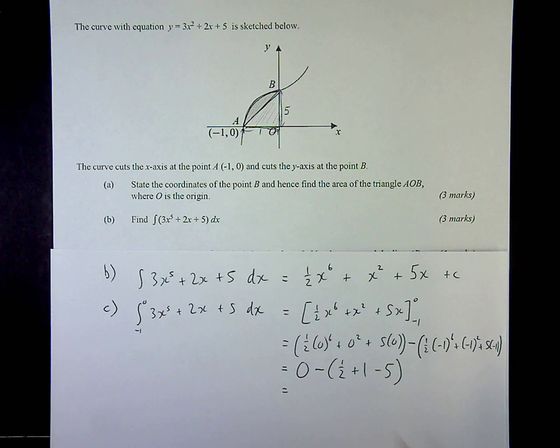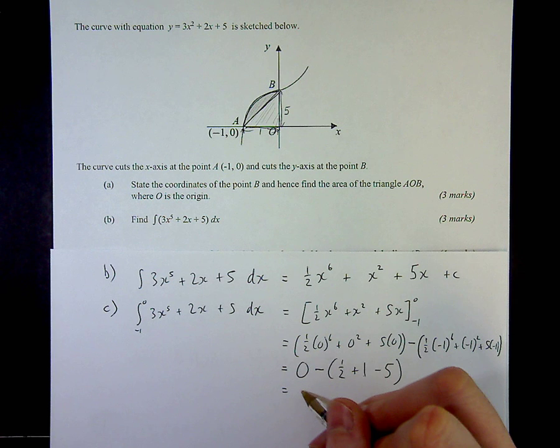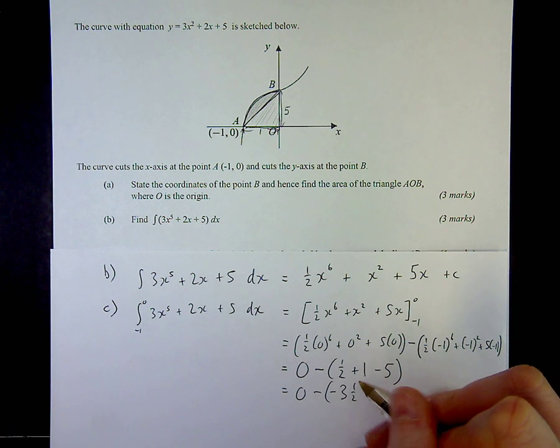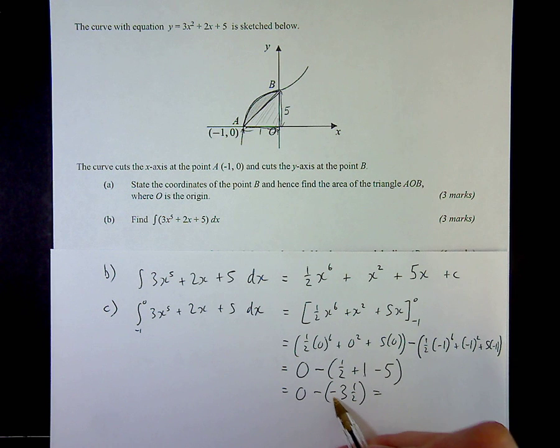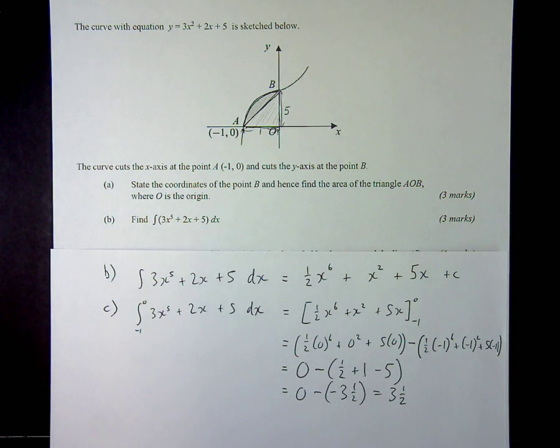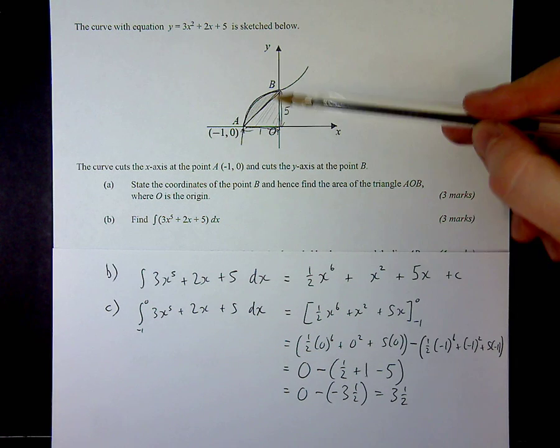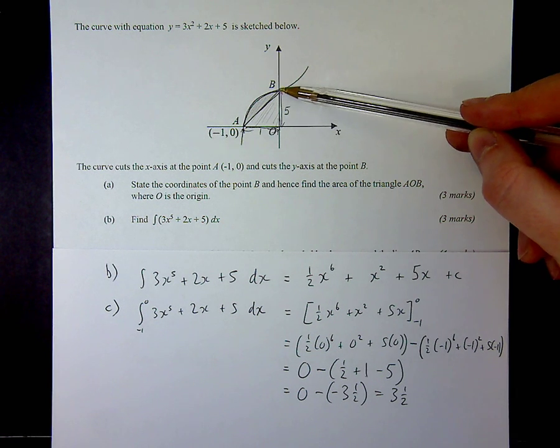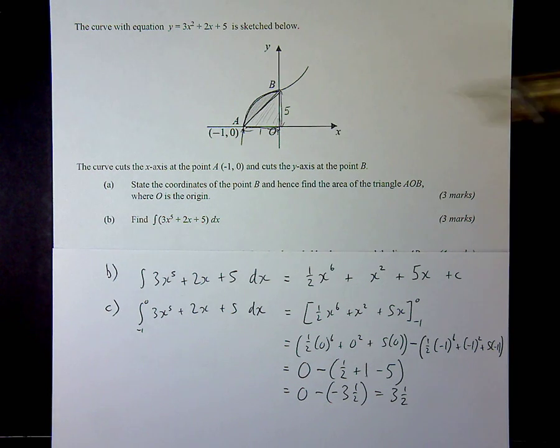And 0 subtract negative 5 is 5. Now I'm not quite finished with the question, because if you think back, I wanted to find the area underneath the curve. The whole area underneath the curve is 5. Well, I just want the shaded region, so subtract the triangle which I found from part A. So therefore, the area I need is 5 subtract the area of the triangle, which is 2.5, giving us 2.5 square units.